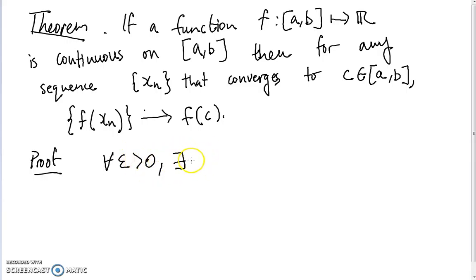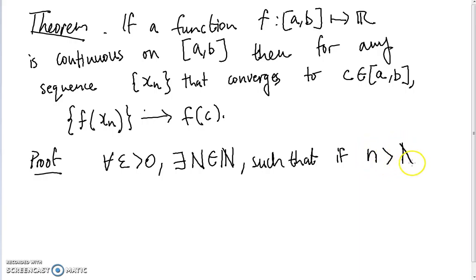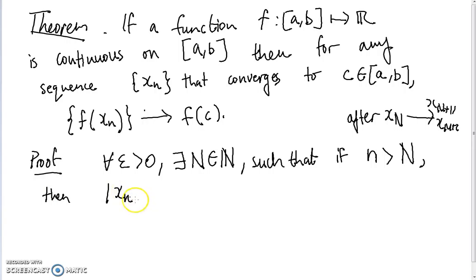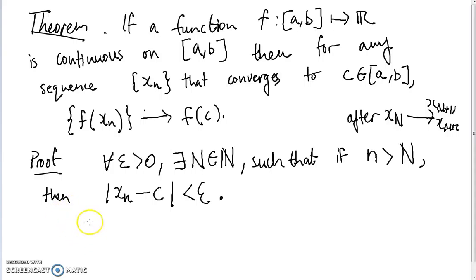We know that x_n converges to c, so for all epsilon greater than zero there exists a natural number N such that if the index n is larger than N, the distance between x_n and c can be made less than epsilon. And since f is continuous on [a,b], it is also continuous at the point c.